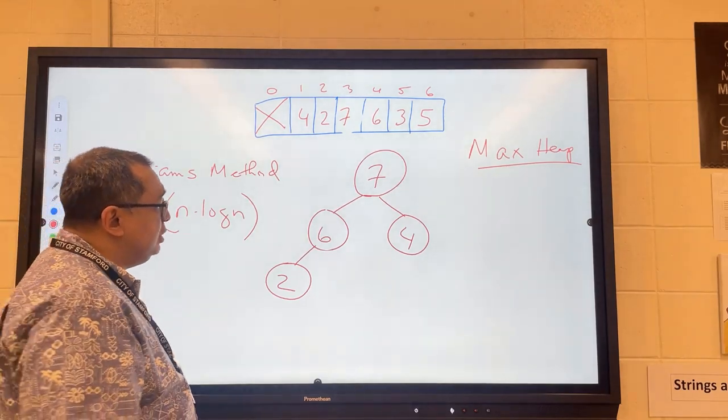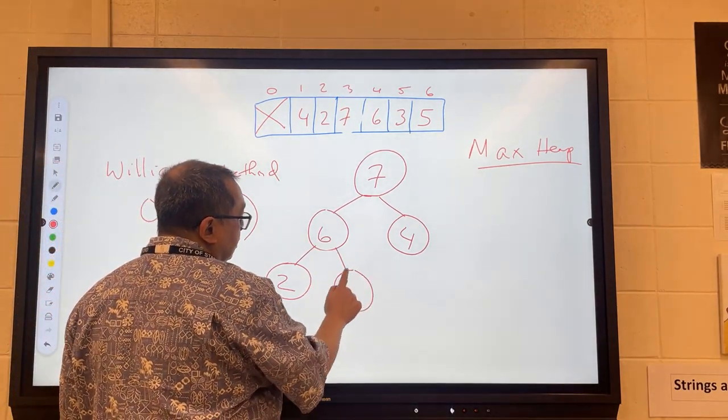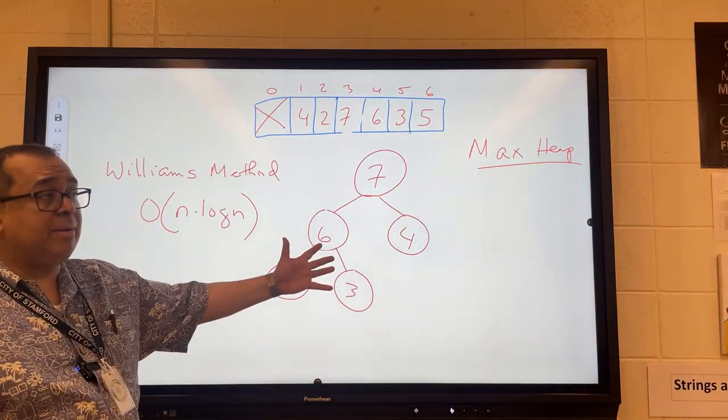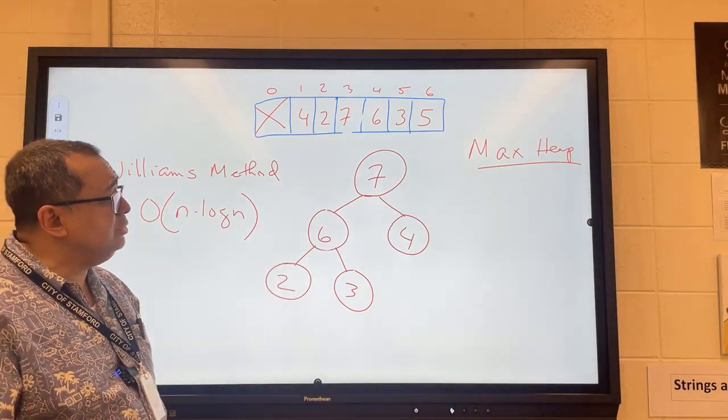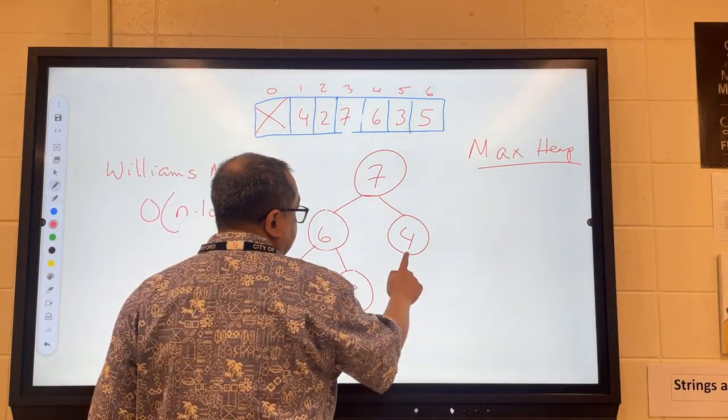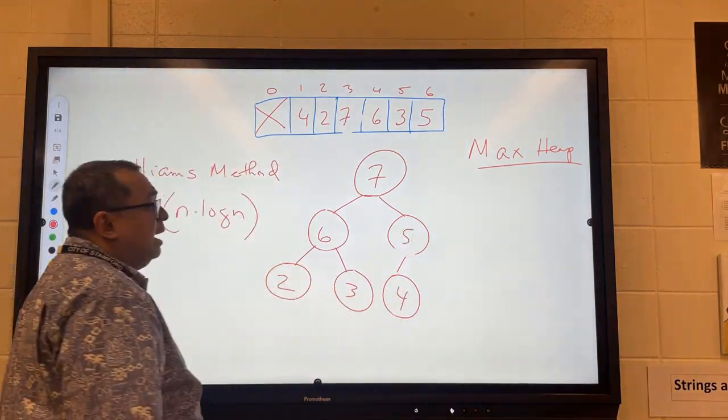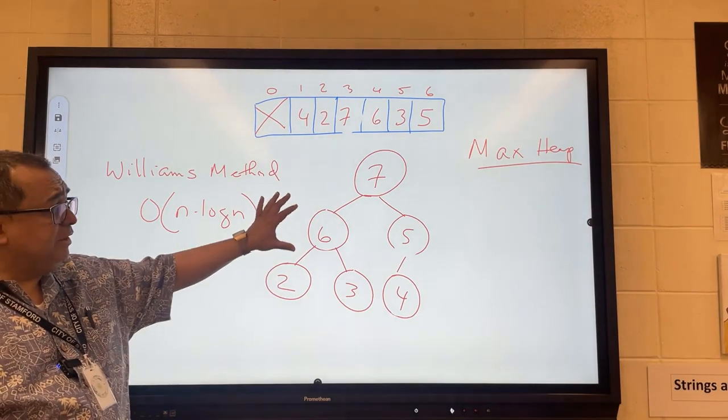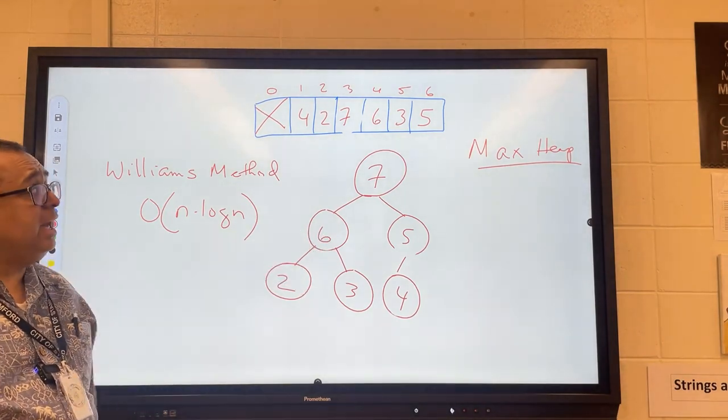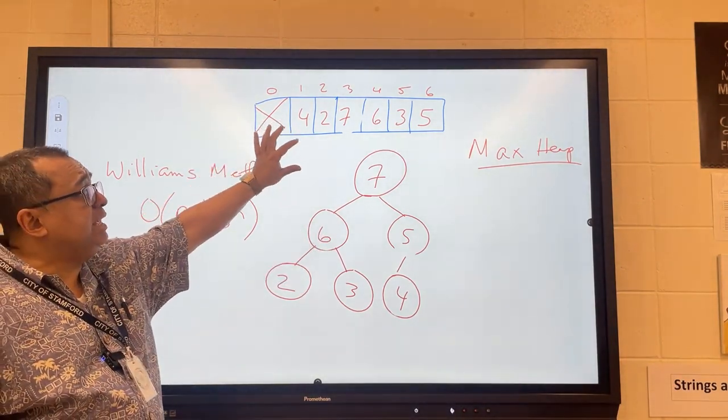And so now I'm going to insert the 3. Here I don't need to swap anything. And then the last thing I need to do is insert the 5. And here I need to swap the 5 and the 4. Now here I've finished building my heap and the array which originally looked like this.